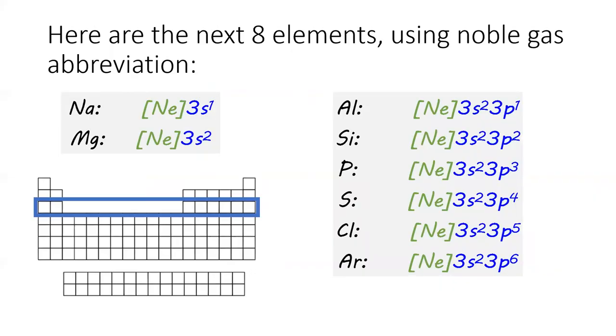The next 8 elements, from sodium to argon, follow the same pattern as the previous 8 elements. I've used noble gas abbreviations to stand in for the first 10 electrons in the electron configuration.